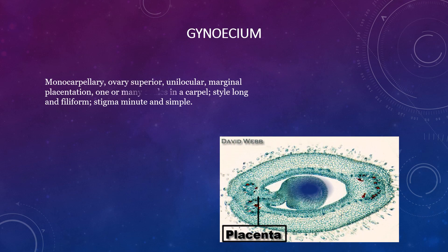Gynoecium has one carpel, one locule, and marginal placentation, with one or many ovules present in a carpel. Style is long and filiform while stigma is minute and simple. They have a superior ovary — the flower is hypogynous — and the placentation is marginal, meaning ovules are attached to the margin of the ovary. The gynoecium characteristics are similar to the Caesalpiniaceae and Papilionaceae families, as all three are placed in family Leguminosae.